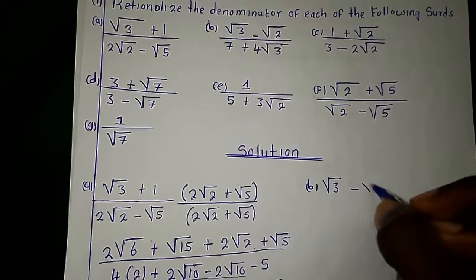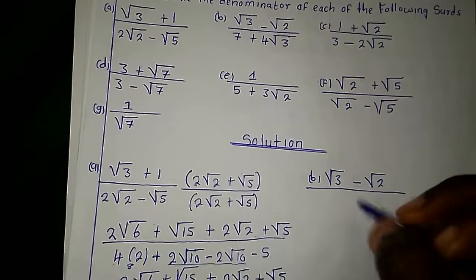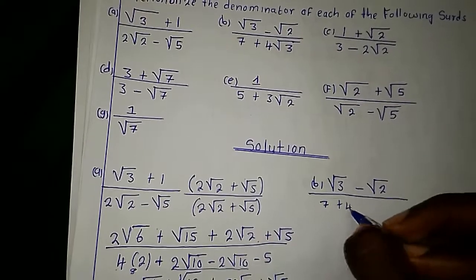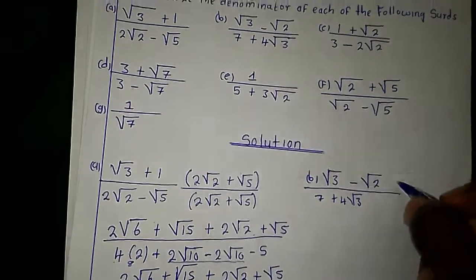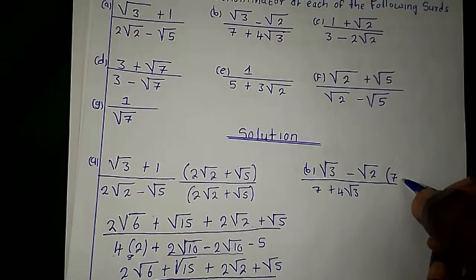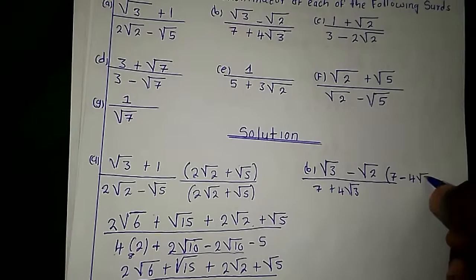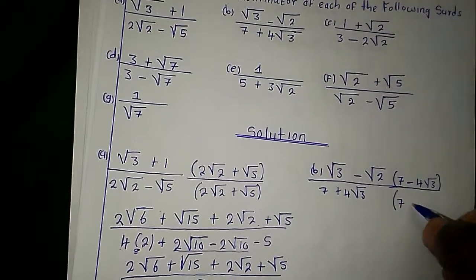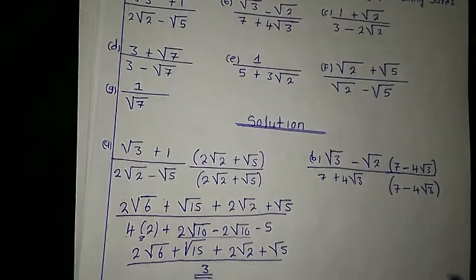The same concept applies for part B — we are going to introduce the conjugate of the denominator. The conjugate is obtained by introducing the opposite sign, so it becomes 7 minus 4 root 3. We apply the same conjugate on top as well. Then we do the multiplication.